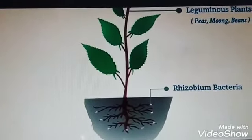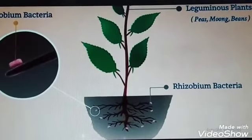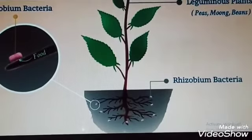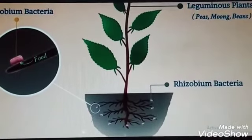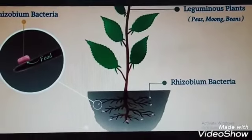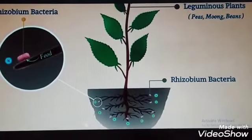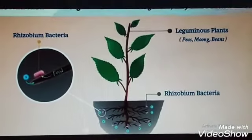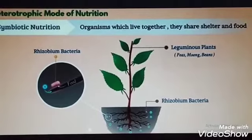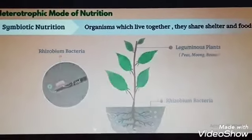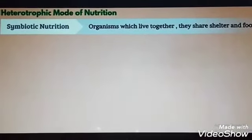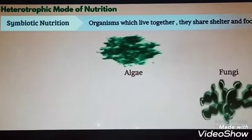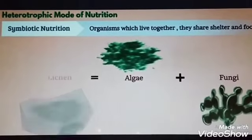The leguminous plants let bacteria live in their roots and also provide food to them. On the other hand, the Rhizobium bacteria convert nitrogen present in the soil into a usable form for the plant. In this way, both are beneficial to each other. Another example of Symbiotic Nutrition is algae and fungi, which together are called Lichens.